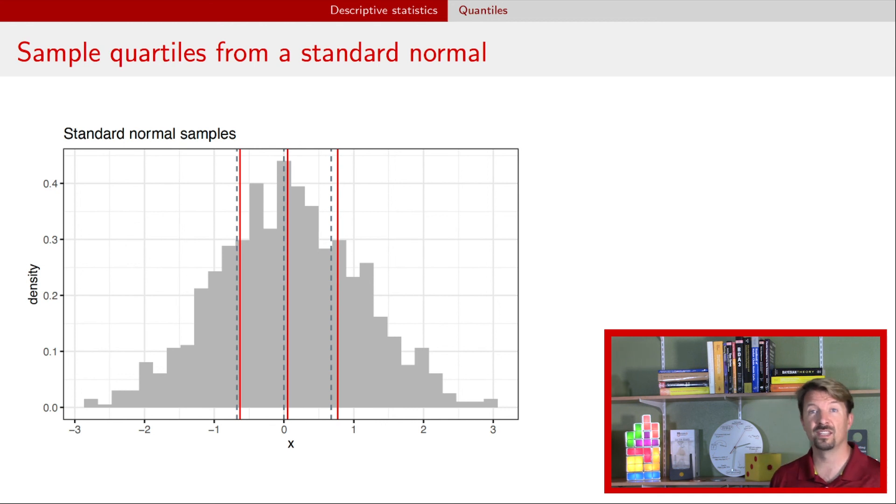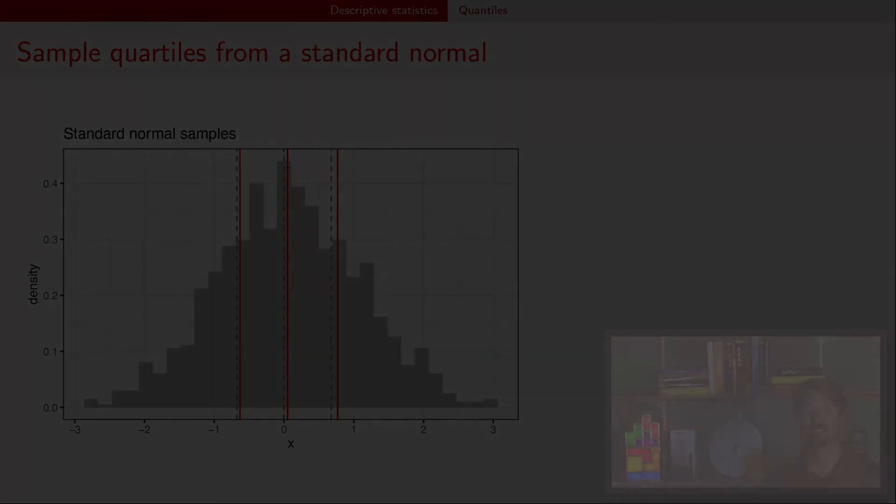Now, the next video is going to talk about some properties of these statistics and of the estimators when those statistics are trying to estimate population parameters. We'll talk about things like unbiasedness, consistency, talk about standard error, and so forth. So hope to see you there. Thank you.